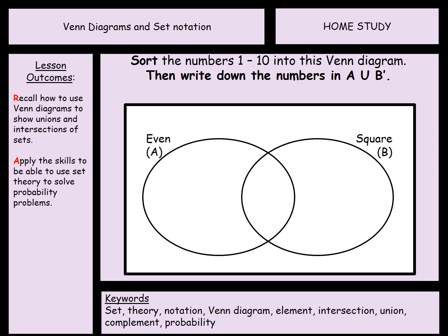So first thing for you to try, if you can draw this out in your book, so a typical Venn diagram, we've got even numbers, we've got square numbers and it says sort the numbers 1 to 10 into the Venn diagram. So you can pause the video now and have a go. The second part that says write down the numbers in A and then this symbol and B with a dash, by the end of the video we'll know what that means.